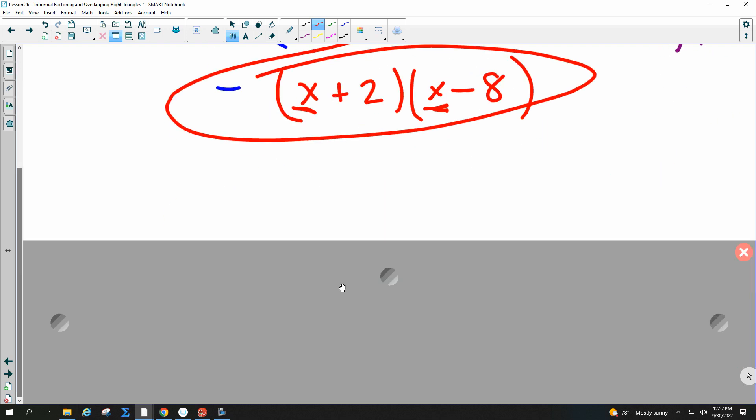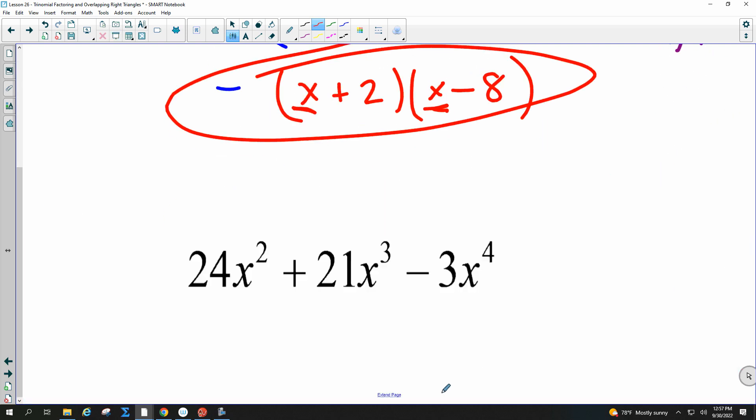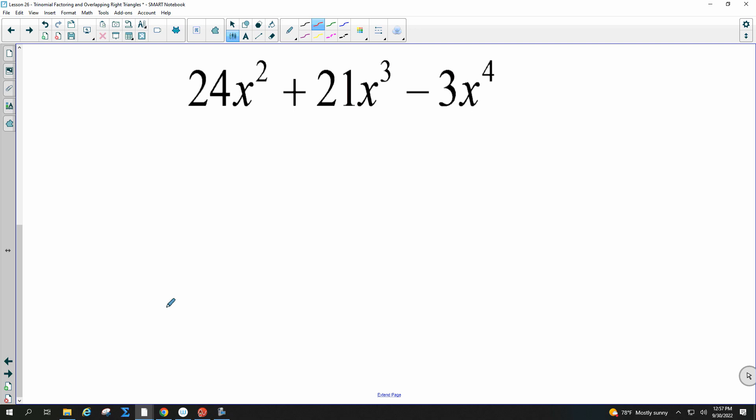Let's do this one. First thing I would do is write it down in descending order by exponent. I have a negative 3x to the 4th. I have a plus 21x cubed. And I have a plus 24x squared.